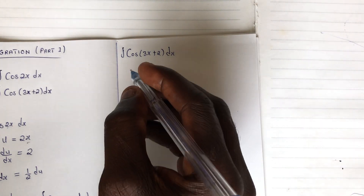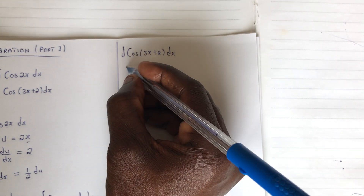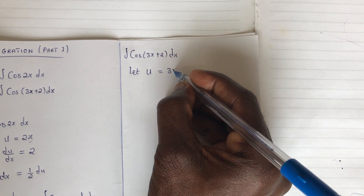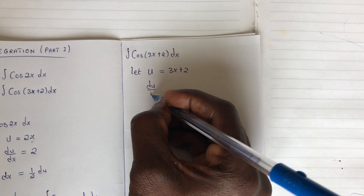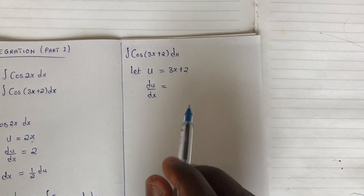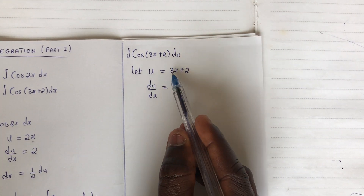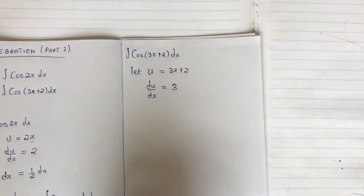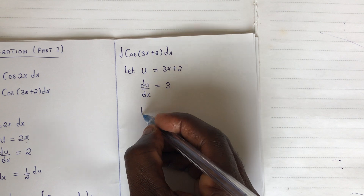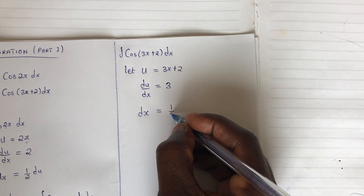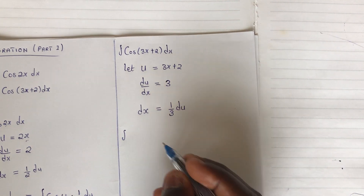So this is our second example. We will represent everything in the brackets by the variable u. So we say let u be equal to 3x + 2. You differentiate this. So du/dx — when you differentiate a constant, the result is 0, so the 2 gives 0. When you differentiate 3x, the result is 3. Now you make dx the subject because you have dx here. So therefore, dx gives us 1 over 3 times du.